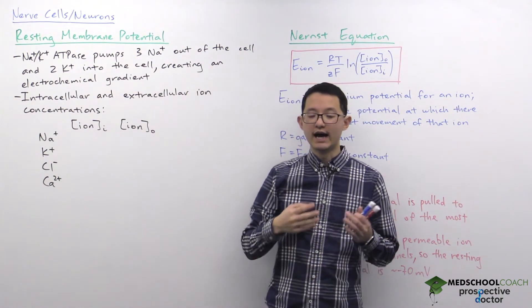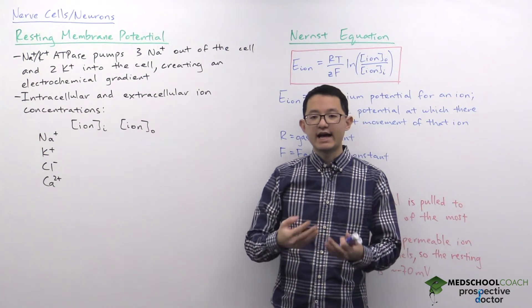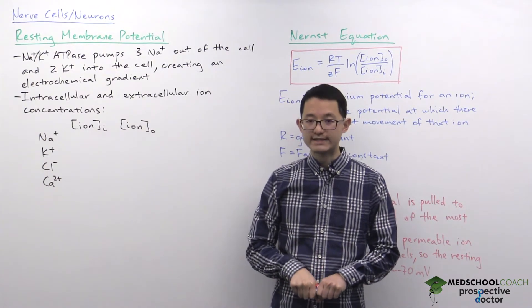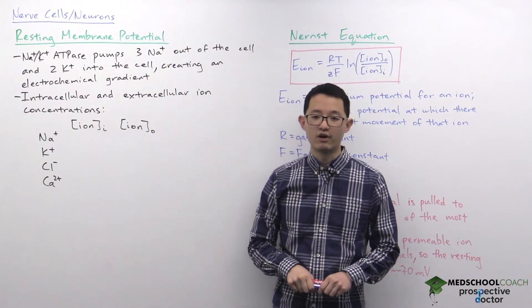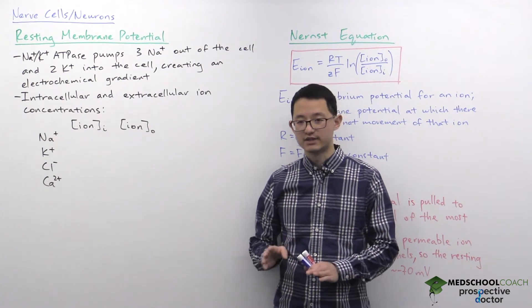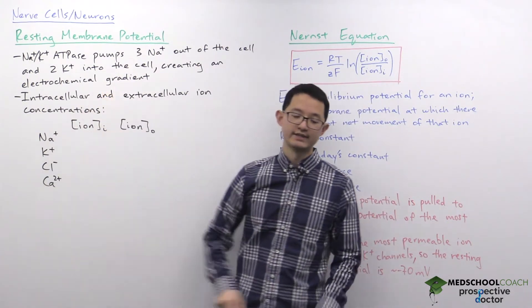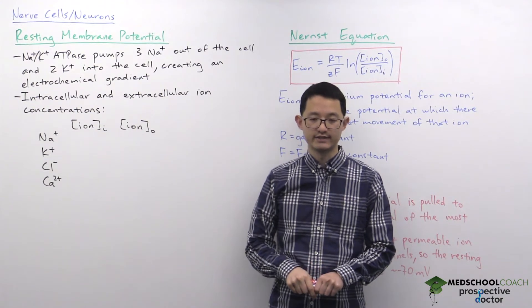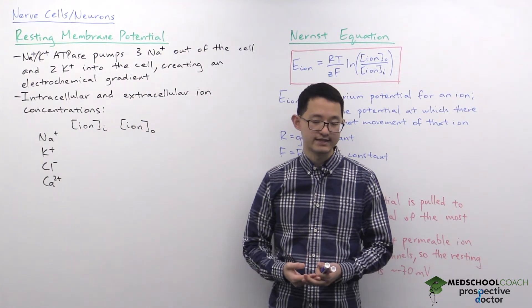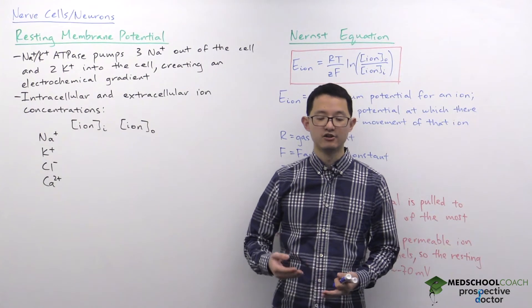The electrochemical gradient includes both an electrical gradient and a chemical gradient. The electrical gradient results from the fact that three cations are pumped out and two cations are pumped in, causing a net loss of positive charge from inside the cell. The chemical gradient means sodium has a high concentration outside the cell and low inside, while potassium is the opposite — high concentration inside and low concentration outside.